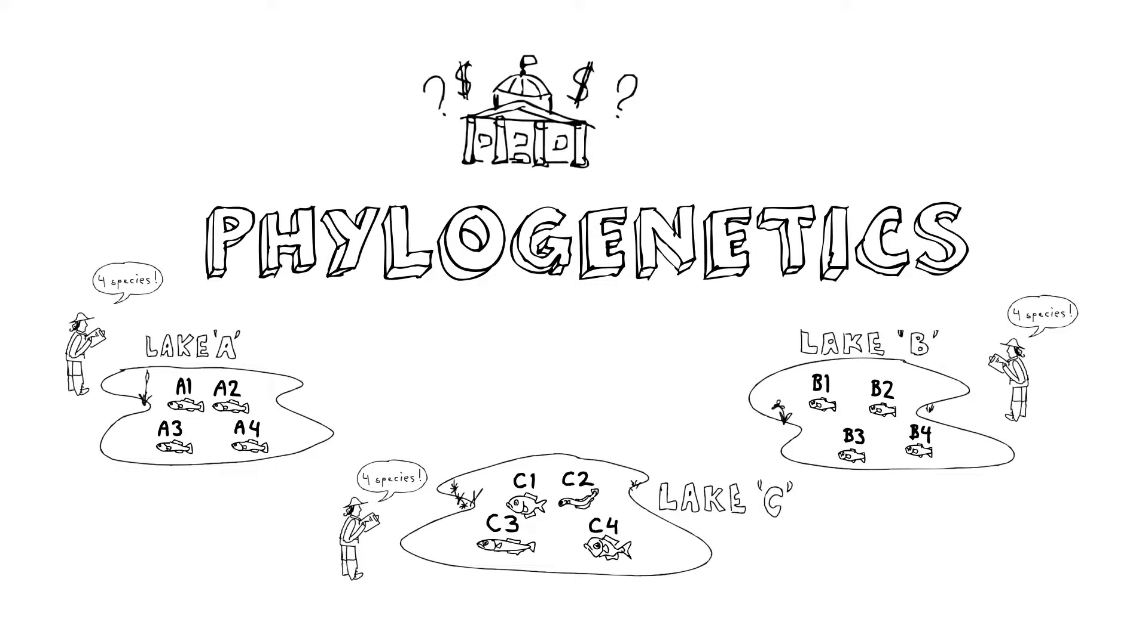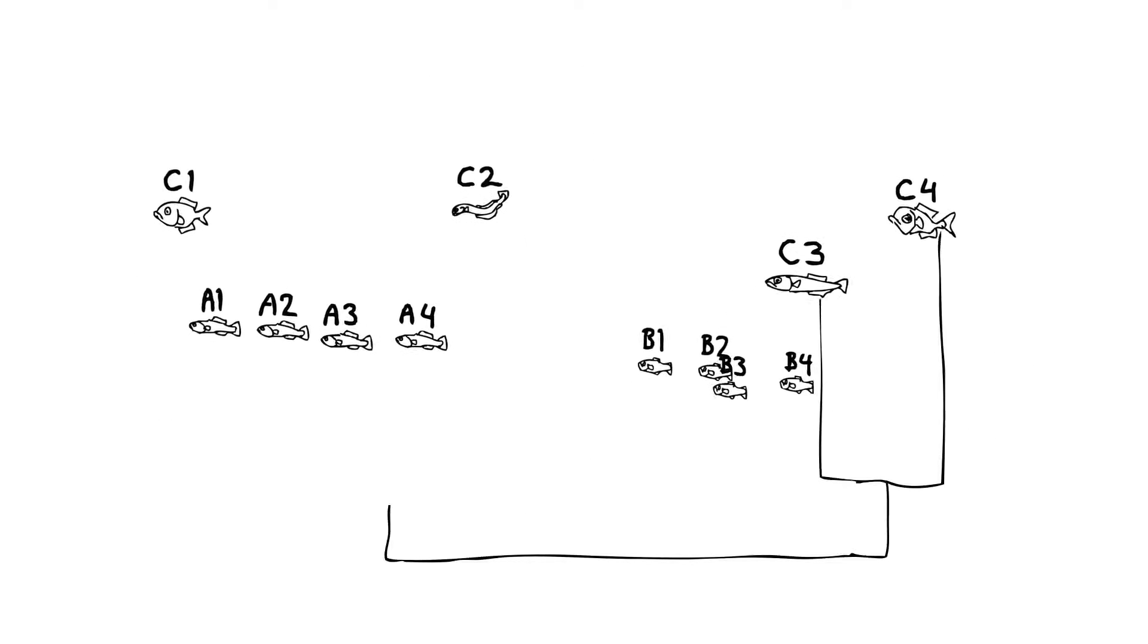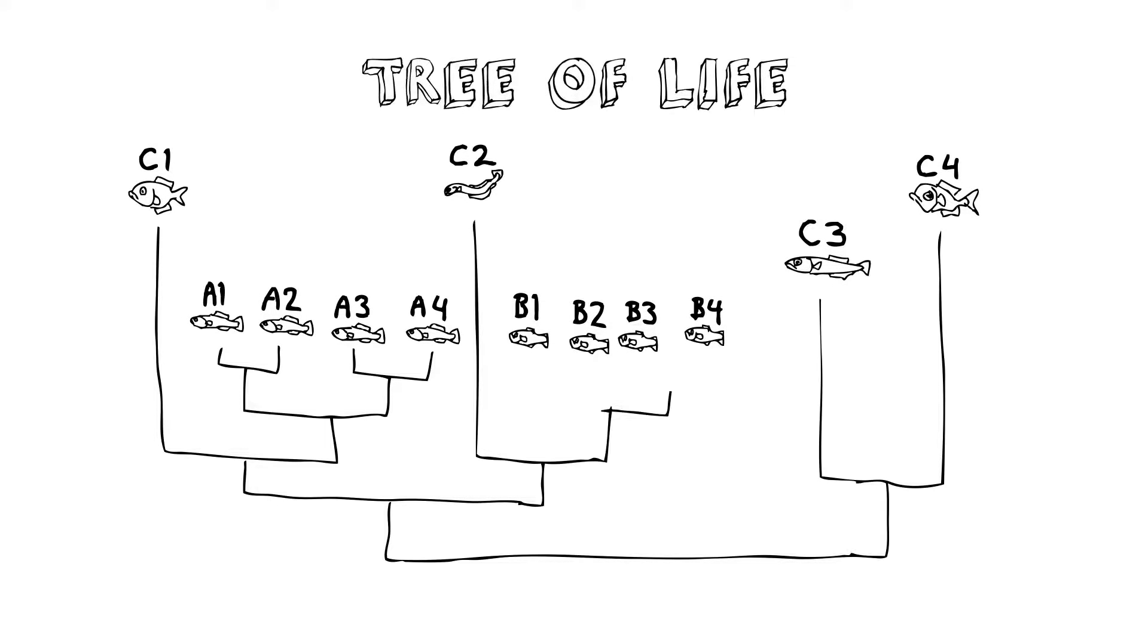Well, we can do that by using phylogenetics. So we study all 12 of these fish species and we build a phylogenetic tree using the latest and greatest of molecular and morphological methods. All these data help us to build a tree of life, this phylogeny.